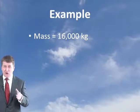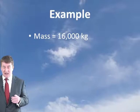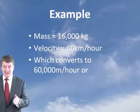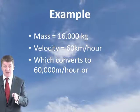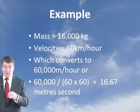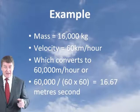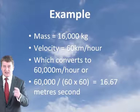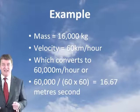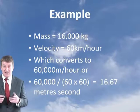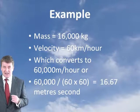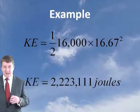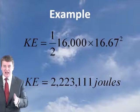You have to make sure you've got all values in the right units. The mass is 16,000 kilos. The velocity is 60 kilometres an hour, which we need to convert to metres per second. 60 kilometres an hour converts to 60,000 metres an hour. Dividing by 60 times 60 gives 16.67 metres per second. Make sure everything is in SI units. Putting this into the formula, the kinetic energy of that vehicle is 2,223,111 joules of energy.